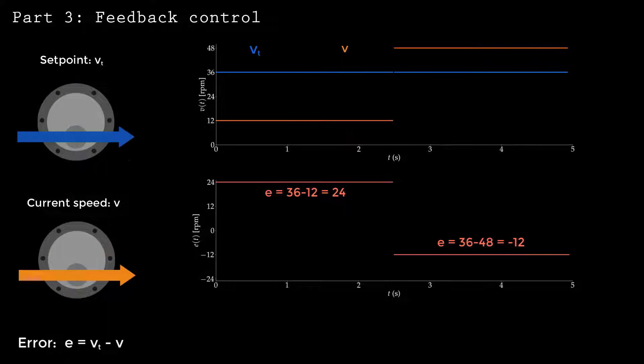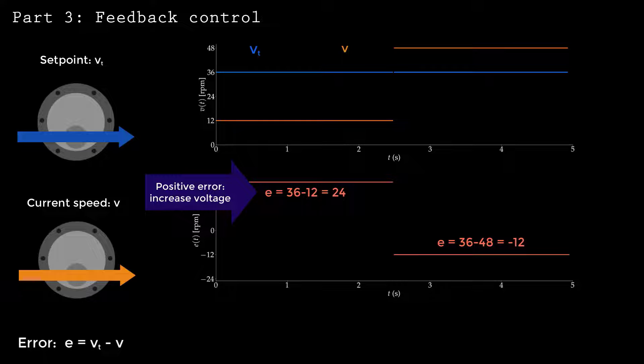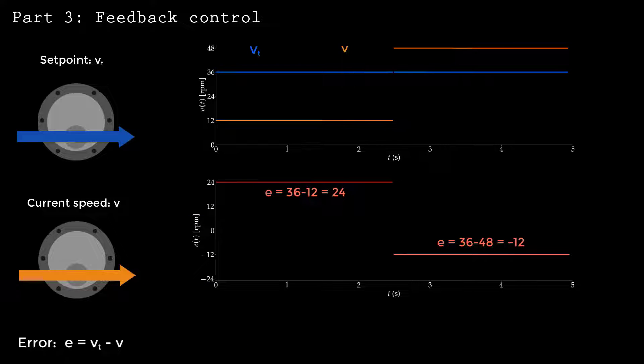In the first case, the error is positive, and we want to apply a positive voltage to speed the motor up. In the second case, the error is negative, and we want to apply a negative voltage to slow the motor down. Proportional control takes advantage of this correspondence by directly using the error to define how much voltage to apply to the motor leads. The error is multiplied by a constant Kp, so we can increase or decrease the magnitude of the response.